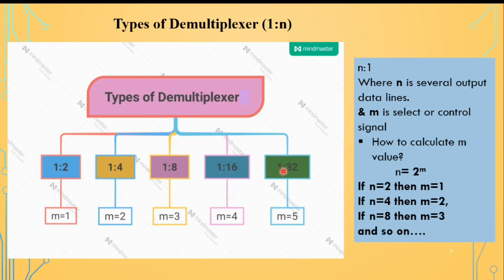Types of demultiplexer also include 1 by 8, 1 by 16, and 1 by 32. Here n represents the number of output lines, and the select lines are calculated as 2 to the power of the number of select lines equals n. For example, for a 1 by 2 demultiplexer, n equals 2 and 2 to the power 1 equals 2, so we need 1 select line. For 1 by 4, n equals 4 and 2 to the power 2 equals 4, so we need 2 select lines. For 1 by 8 we need 3, for 1 by 16 we need 4, and for 1 by 32 we need 5 select lines.